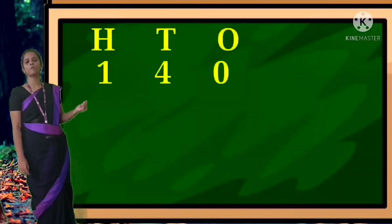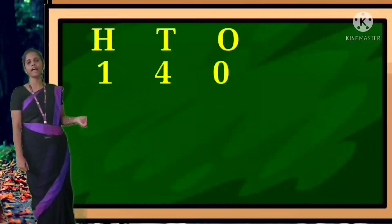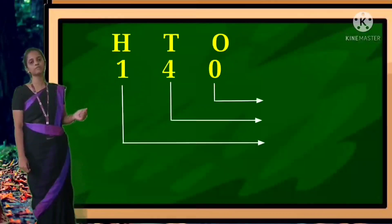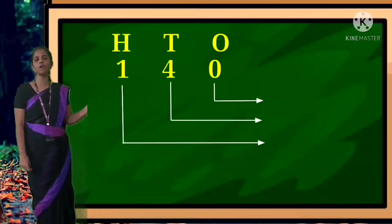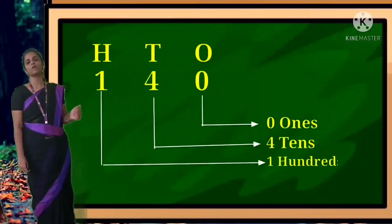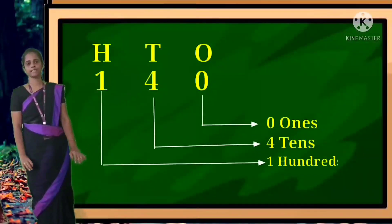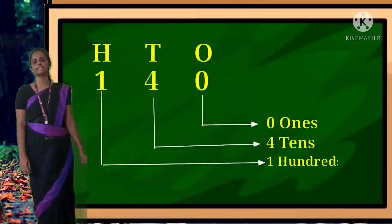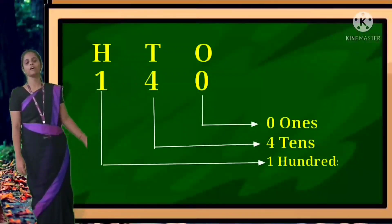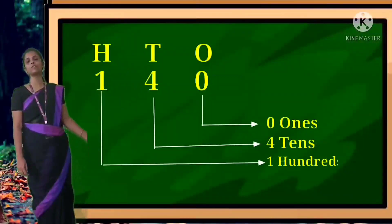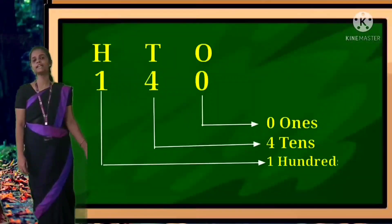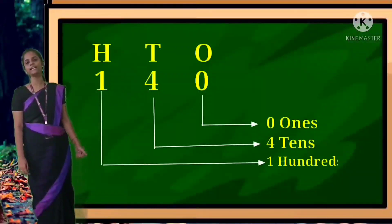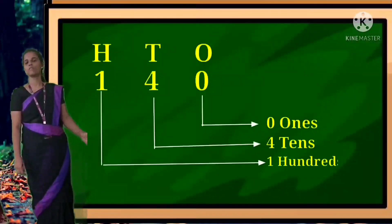The next sum is 140. Draw the L shape. 0 is in ones place, 4 is in tens place, 1 is in hundreds place. H-U-N-D-R-E-D, hundred.